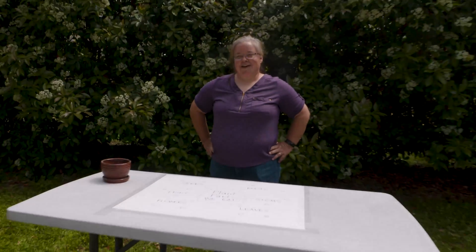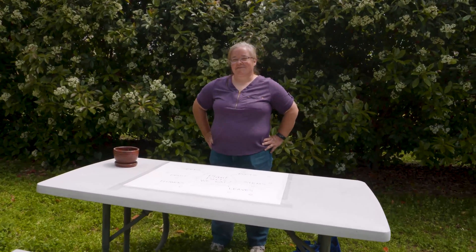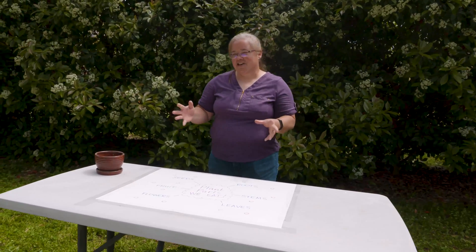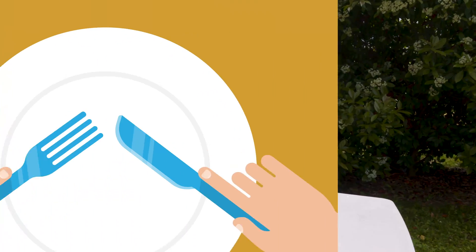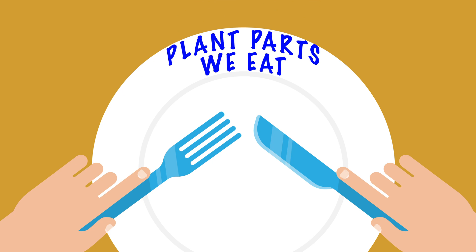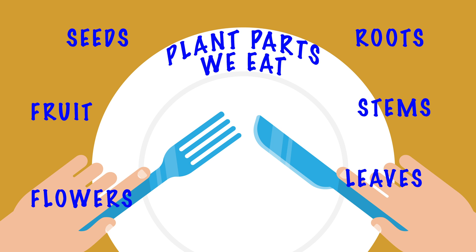Now that we've talked about the six parts of the plant, we're going to talk about some of the food we eat and determine what part of the plant it comes from. Remember the six parts of the plant are the roots, the stems, the leaves, the flowers, the fruit, and the seeds. We're going to give you a quiz and see if you can figure it out.